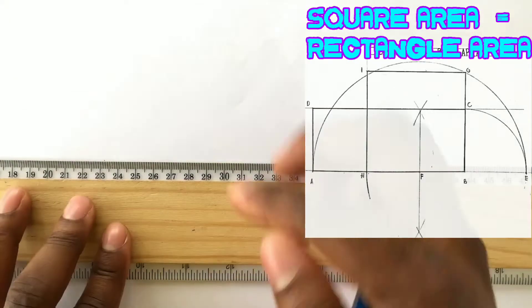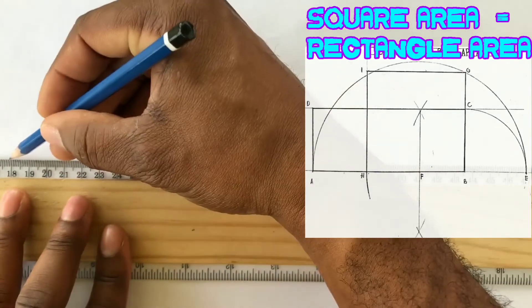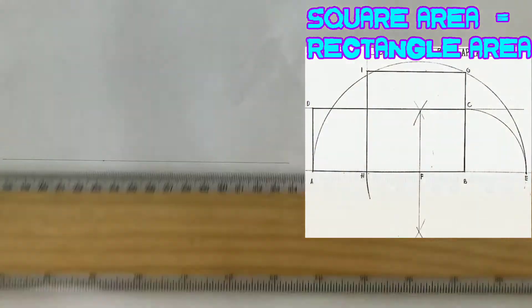Using your T-square, draw a line parallel to AB through the point you identified.